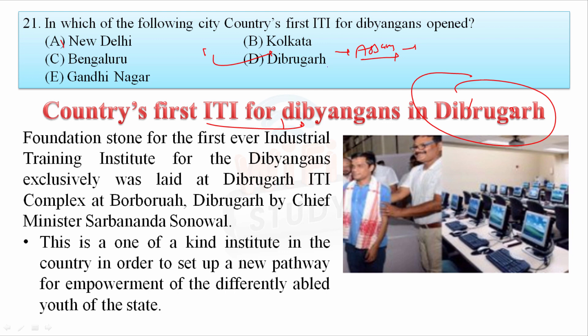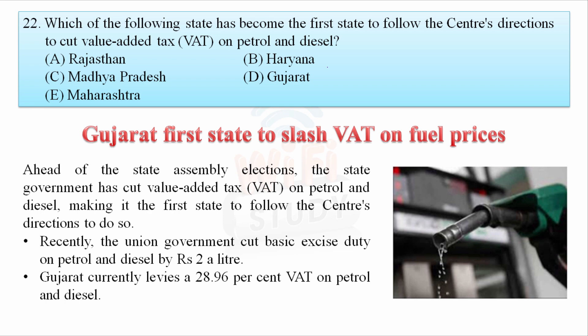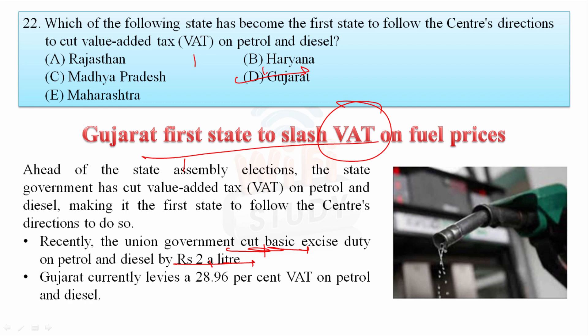Which state became the first to follow the central direction to cut value-added tax on petrol and diesel? Gujarat was the first state to slash VAT on fuel prices. The Union Government cut the basic excise duty on petrol and diesel by Rs 2 per litre, and Gujarat then reduced its VAT by 2%.